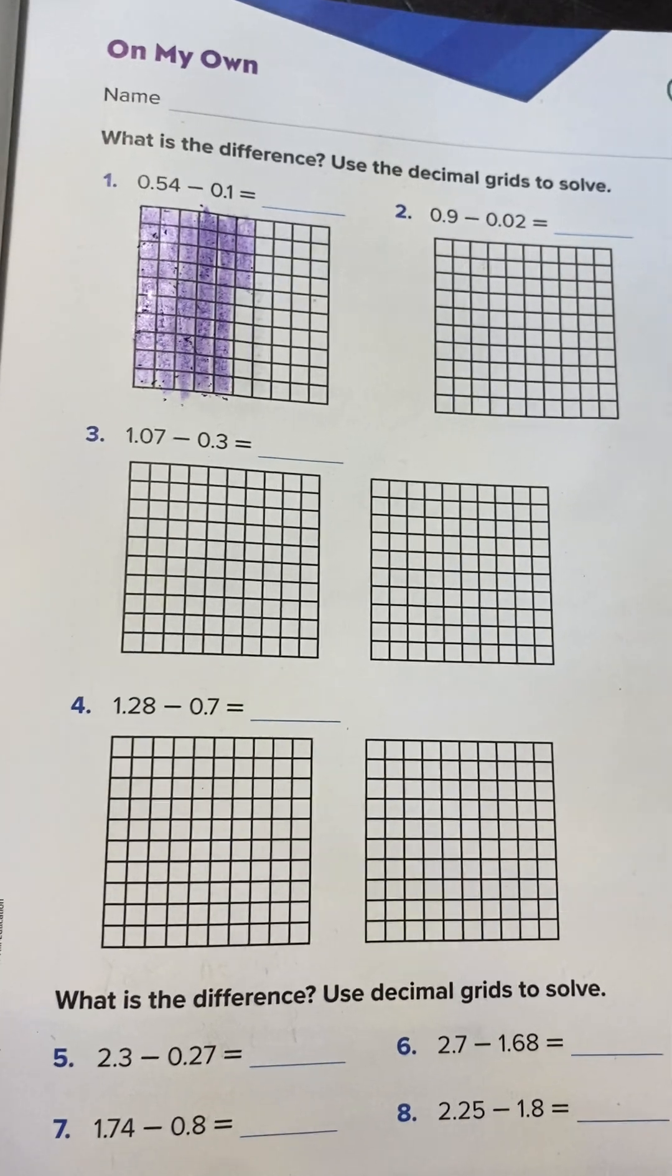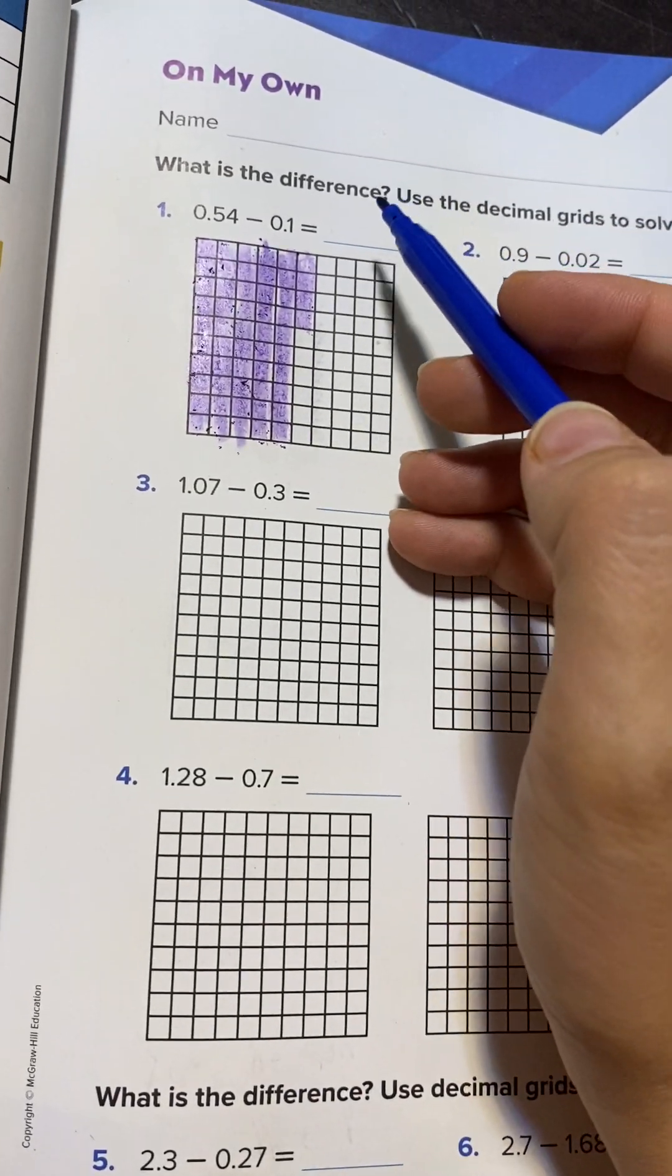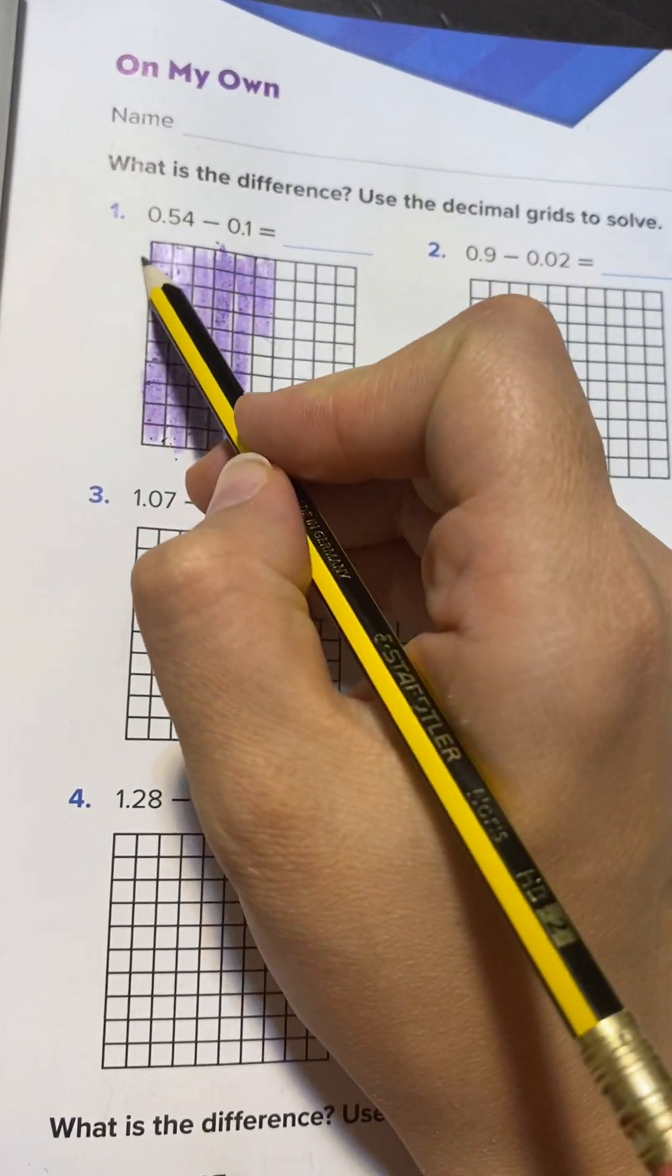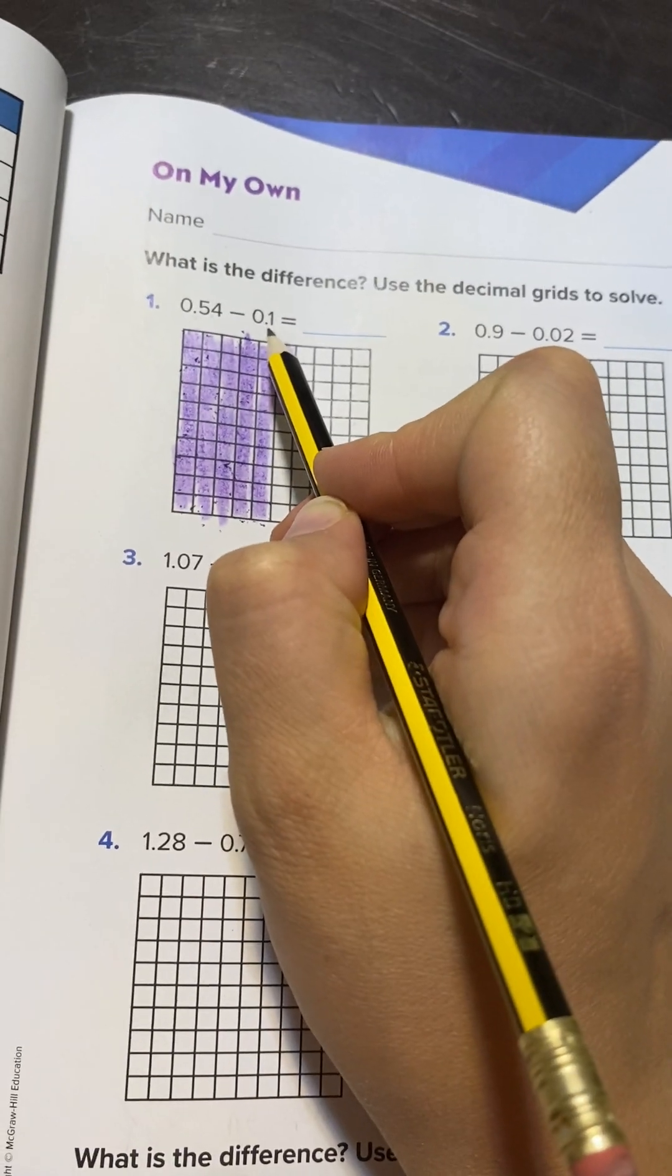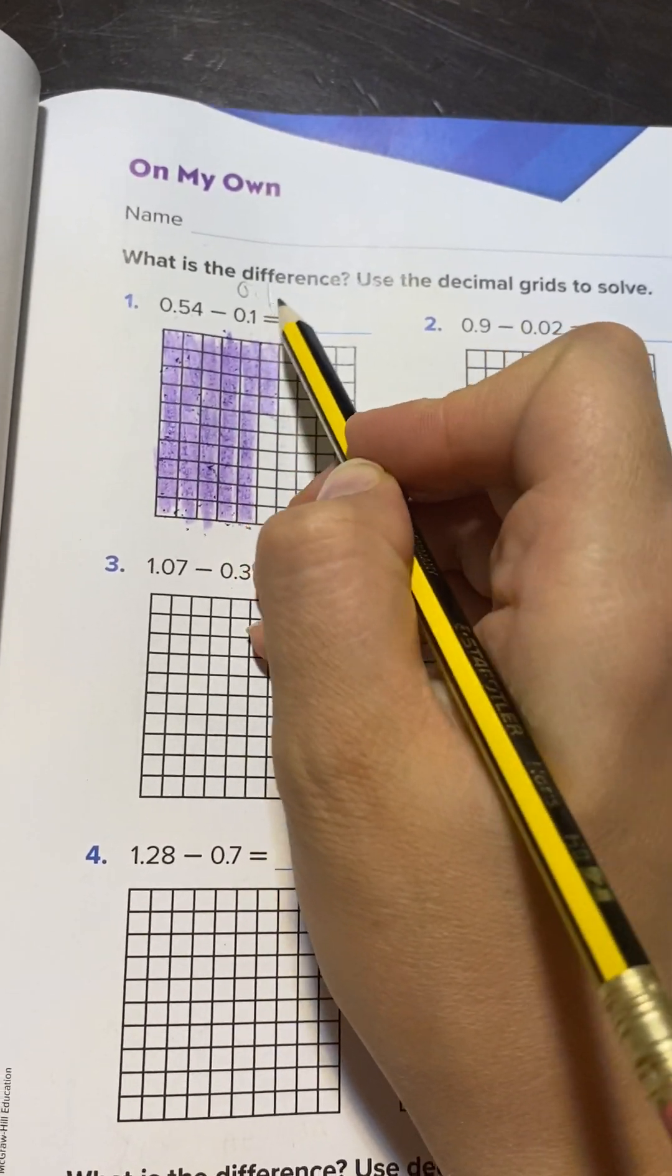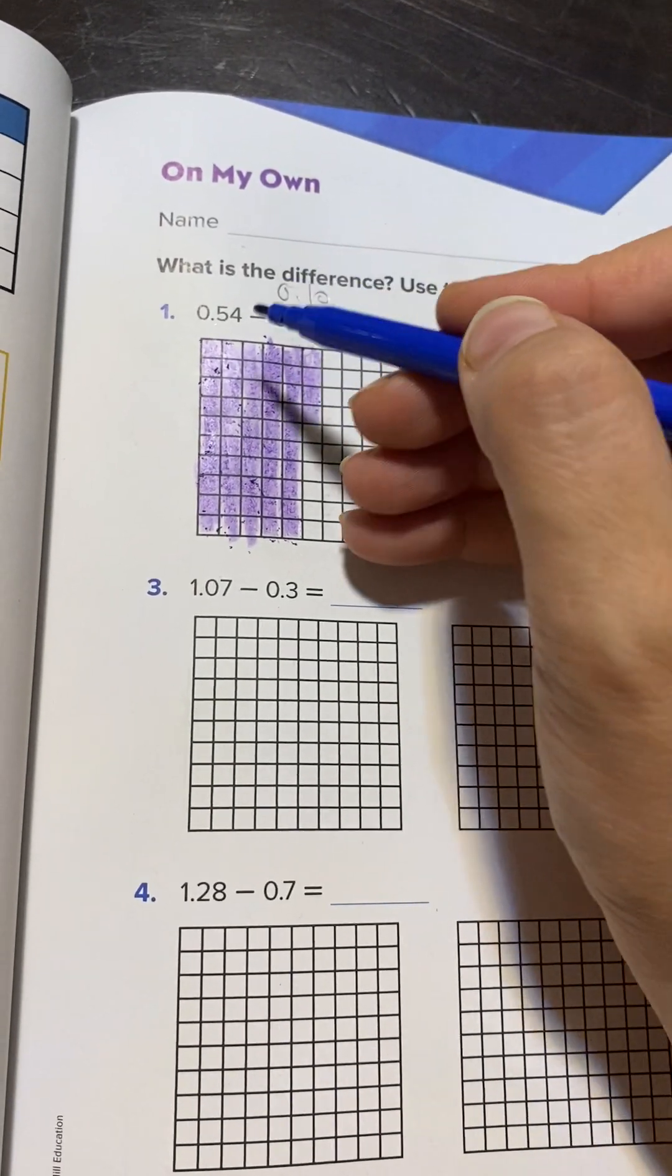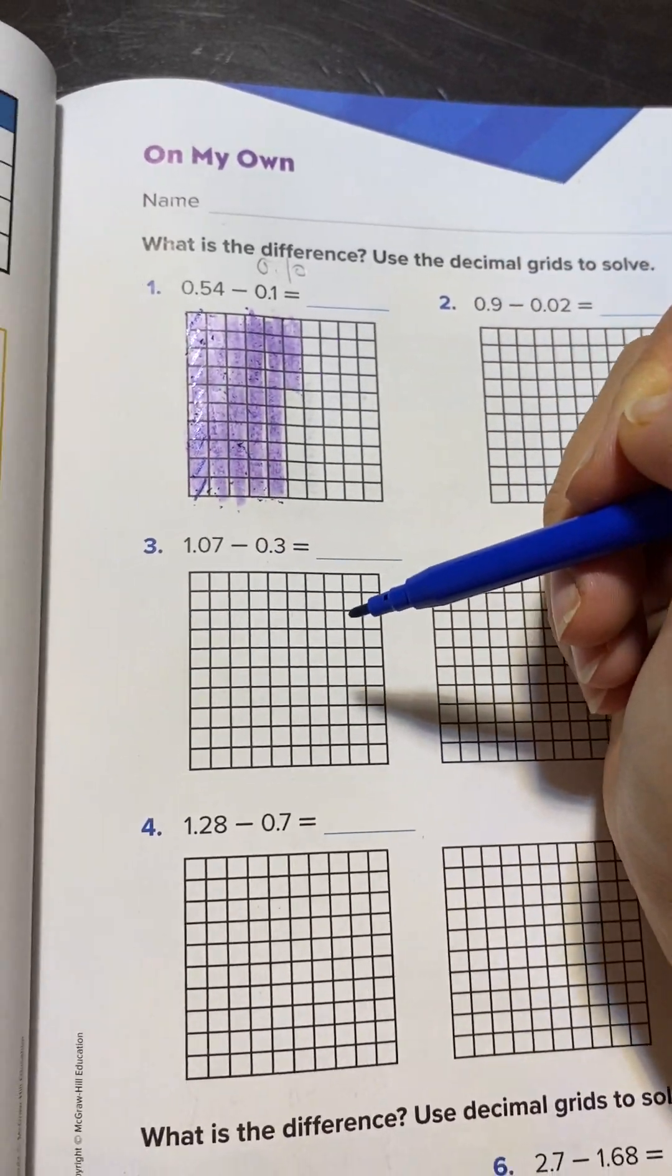These are the 54 squares. Now I will cancel how many? Be careful, this one is two digits. How will I make this two digits? So it is 0.10. I will cancel 10, so I will cancel the first one.